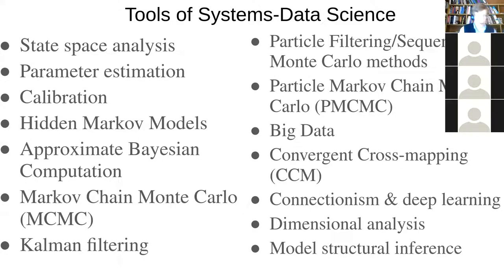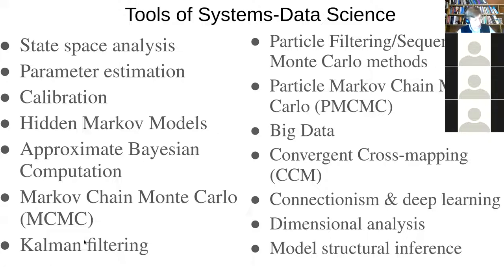Beyond that, there's a set of methods that we can explore here that are model-based. For example, in parameter estimation and calibration, these hidden Markov models, and approximation computation — we're dealing with parameter estimation methods. Common filtering is used to estimate state space, to estimate where we are in state space — what's called filtering. It's being used to join together a model-based representation with incoming data to get a privileged understanding of the current situation. Particle filtering, sequential Monte Carlo methods, and PMCMC generalize that, with PMCMC also estimating parameter values.